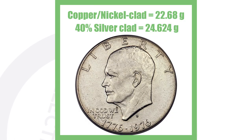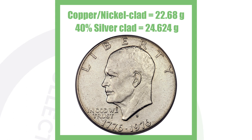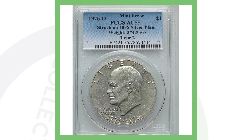Here is an Eisenhower dollar coin. I want to show you the different weights between a non-silver Eisenhower dollar and a 40% silver clad Eisenhower dollar. The copper-nickel clad is 22.68 grams, and the 40% silver clad is 24.624 grams. Keep that in mind, because you want to weigh your coins to identify the next type of error. You can weigh your coins using a coin scale from couchcollectibles.com — link always in the description.